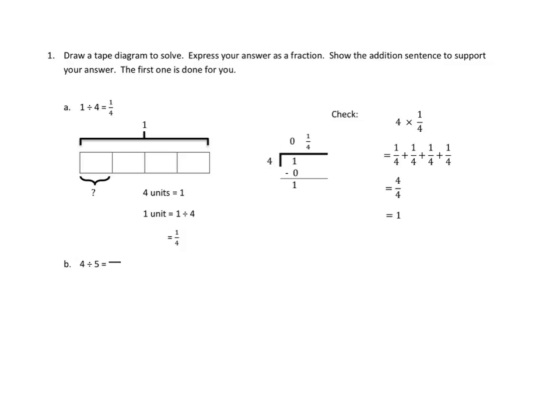And then they checked their work by saying, what if we did repeated addition or multiplication? What if we took the divisor 4 and multiplied it by our quotient, 1 fourth? 1 fourth plus 1 fourth plus 1 fourth plus 1 fourth equals 4 fourths. Sure enough, we've created our whole, our 1 again. Excellent. Our original dividend.